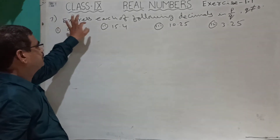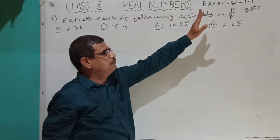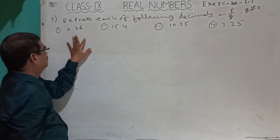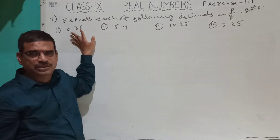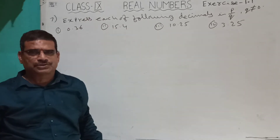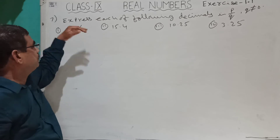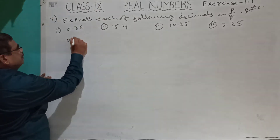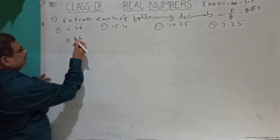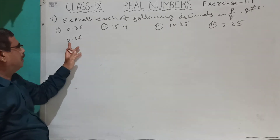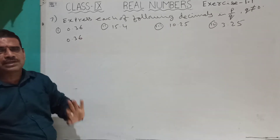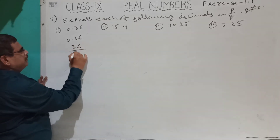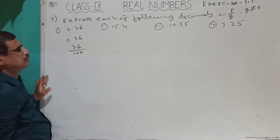The 7th question: express each of the following decimals in P by Q form where Q is not equal to 0. We have to convert the decimal numbers back into fractions. For 0.36, after the point there are two decimal places, so write 36 by 100.